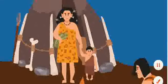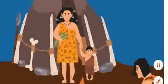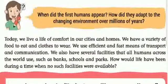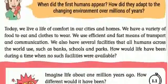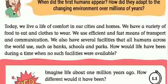First, human evolution. When did the first human appear? How did they adapt to the changing environment over millions of years? These are the basic questions. When did the first human appear? We don't know the exact answer, but our scientists have found out approximately the time period — the development from animals to humans, the next stage.